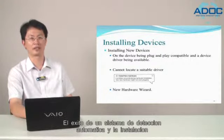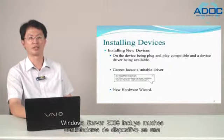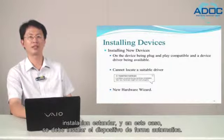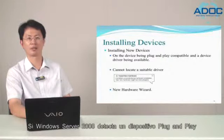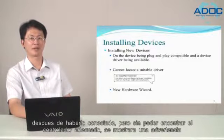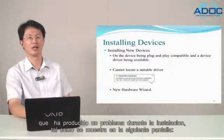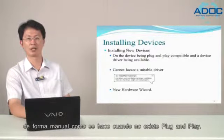The success of automatic detection and installation depends on the device being Plug and Play compatible and a device driver being available. Windows Server 2008 includes many device drivers in the standard installation, and in that case it should install the device automatically. If Windows Server 2008 detects a Plug and Play device but cannot locate a suitable driver, it displays a warning that a problem occurred during installation. Sometimes when this happens, you must install the hardware device manually, as you do with non-Plug and Play devices. More typically, Windows Server 2008 starts the driver software installation component, which in turn starts the Found New Hardware wizard.